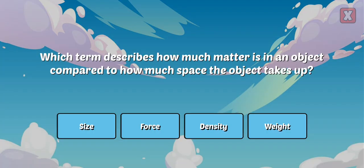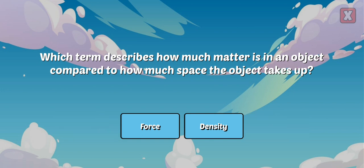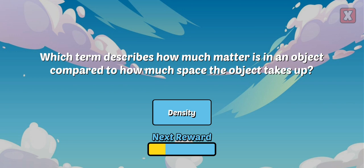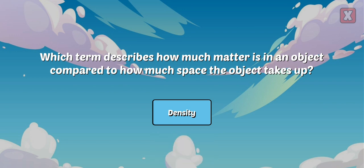Which term describes how much matter is in an object compared to how much space the object takes up? The amount of matter in a specific space is its density.